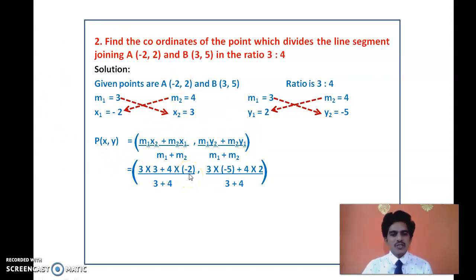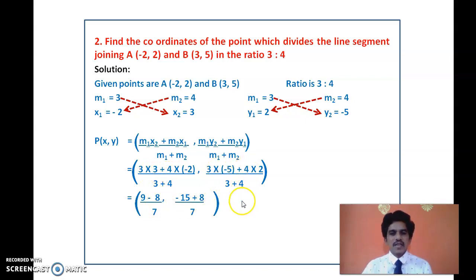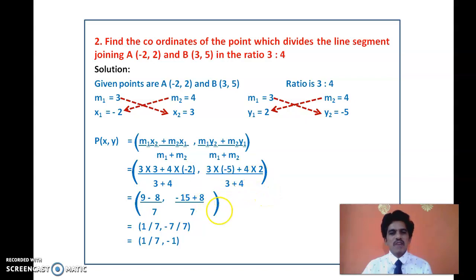Calculating: x = (9 + (-8)) / 7 = 1/7, and y = (-15 + 8) / 7 = -7/7 = -1. So the x-coordinate is 1/7 (cannot be simplified further), and the y-coordinate is -1. The coordinates of the dividing point are (1/7, -1). Again, note that B is (3, -5), not (3, 5) — that was a typing error.